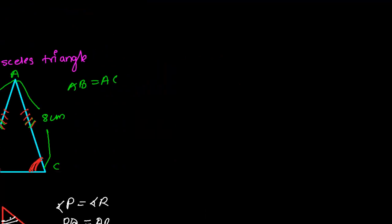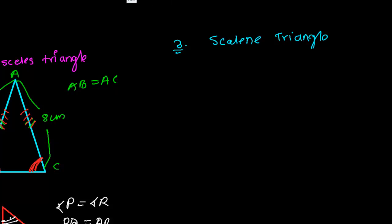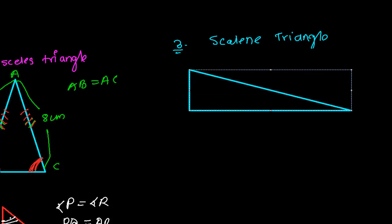Now the third type of triangle based on sides is the scalene triangle. I call it a 'poor guy' because it doesn't have any equal sides — none of the sides are equal to each other.